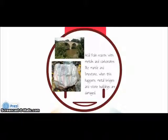Acid rain reacts with metals and carbonates like marble and limestone. When this happens, metal bridges and stone buildings are damaged.